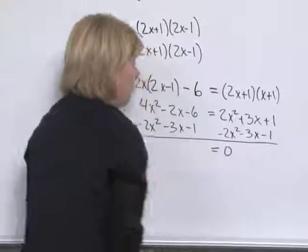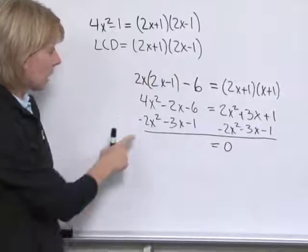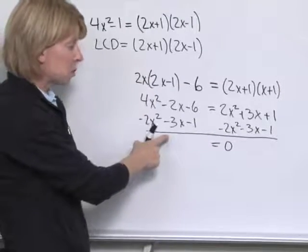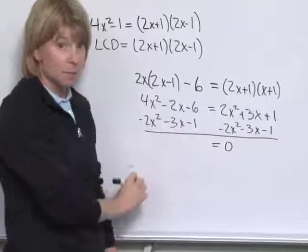We'll be left with 0 on the right. And on the left we'll have 2x squared minus 5x minus 7.